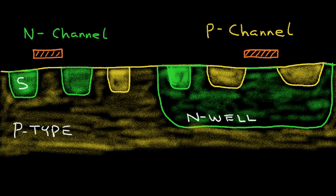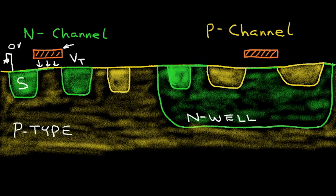If we have the source voltage set to ground, or 0 volts, and we increase the gate voltage by a certain voltage we call V-threshold, that's the critical voltage at which the strength of the electric field under the gate is just enough to start inverting this P-type region to an N-type region, thus getting conduction between the source and the drain. As we increase the voltage at the gate, this electric field becomes more intense and we drive this channel region down further.